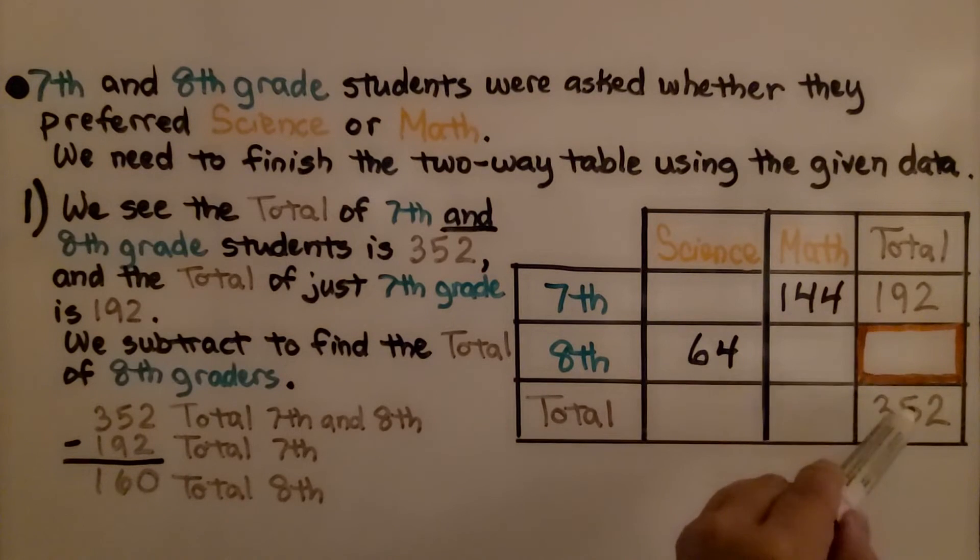The difference between 352 and 192 is going to be the total of 8th graders. We subtract and we get 160. We know that the total of 8th graders is 160.